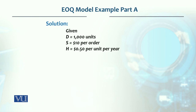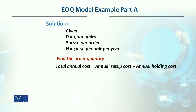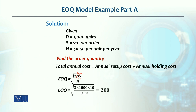So here it is: 1000 units, ordering cost per order is $10, and holding cost is $0.50 per unit per year. We need to find the order quantity. The EOQ model is derived using setup cost and holding cost, and the formula is: Economic Order Quantity = square root of (2DS / H).